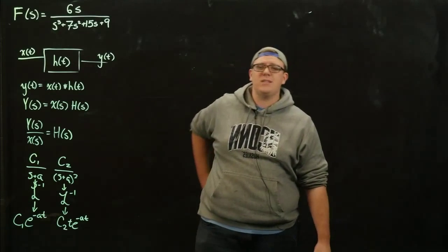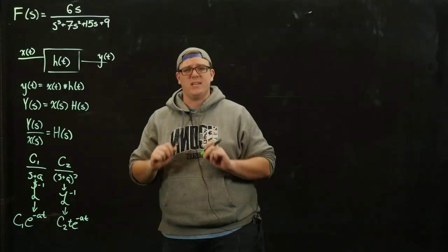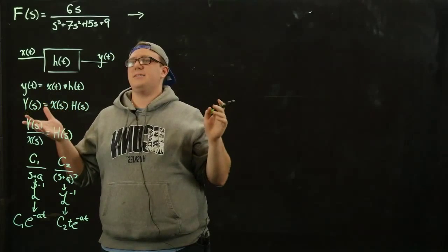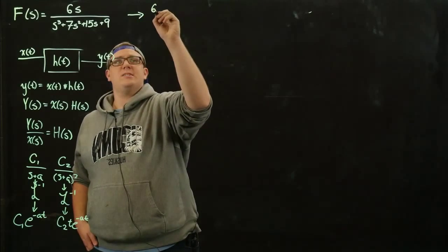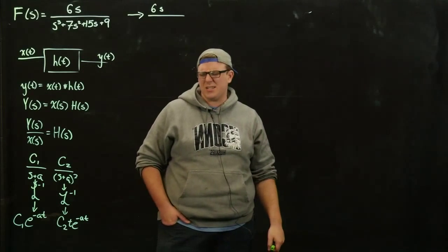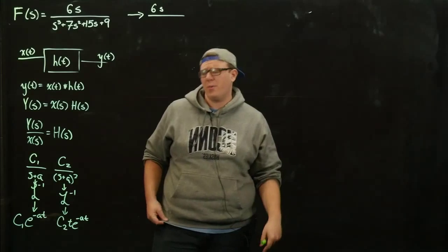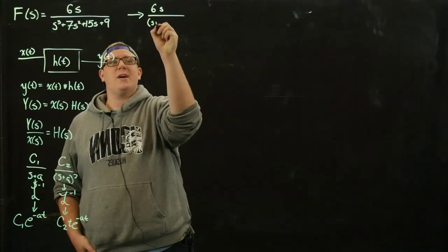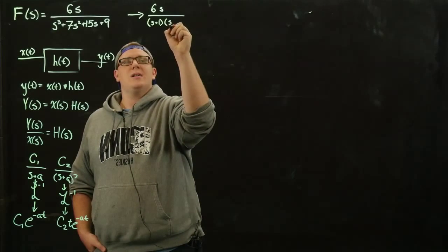We're first going to take this ugly-looking function, decompose it, and then take the inverse Laplace transform, because that will be easier. The first thing we need to do is factor the denominator. This function here is not very easy to factor — there's no really good way to find the roots of a polynomial of degree higher than 2. But it just so happens I know what these roots are, and you'll usually be given what they are, or you can use some system identification tool.